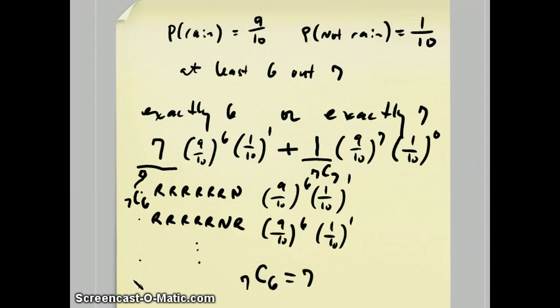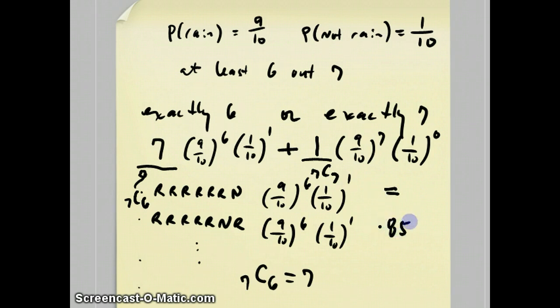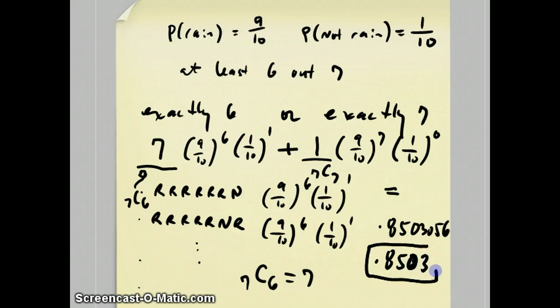Now you can run this all through the calculator. As a decimal, you'll get 0.8503056. For the regents, you could round to four decimal places. If you do it as fractions, you could leave it as a fraction also. That does it for question number 30.